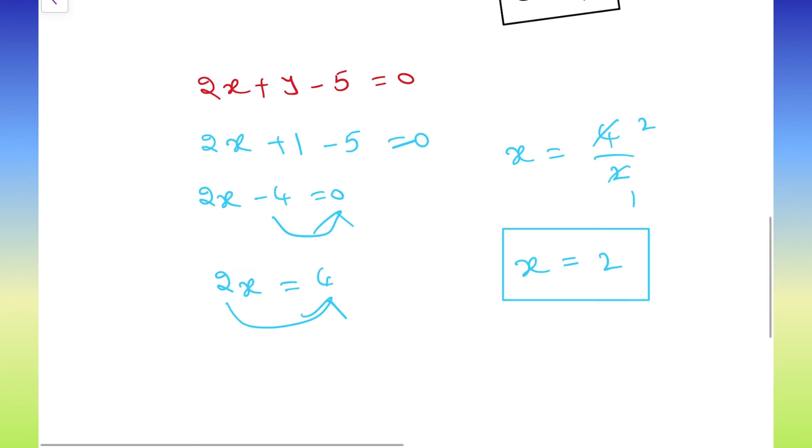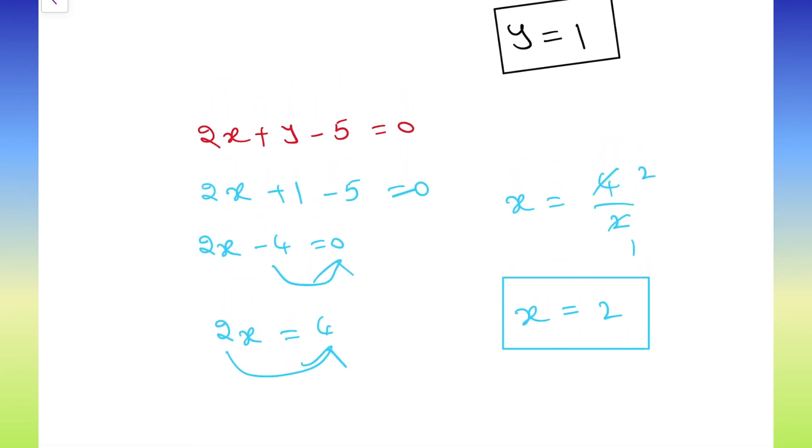After solving both the equations, x value we got as 2 and y value we got as 1. So, 2 comma 1 will be the solution.